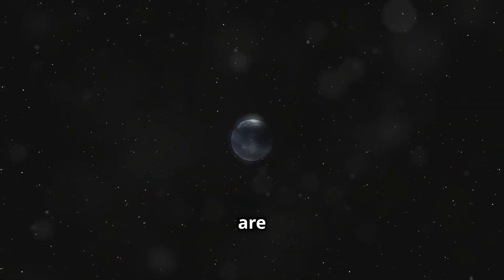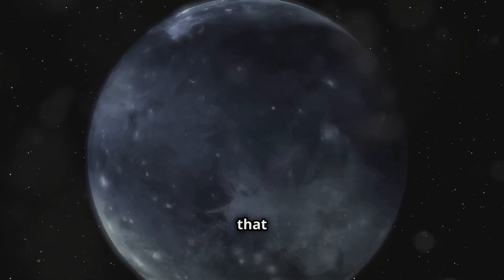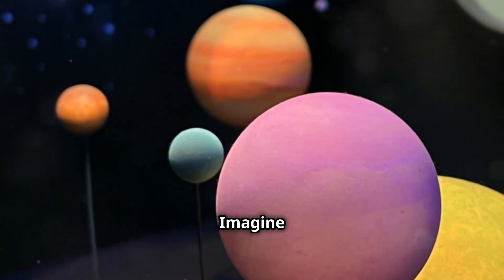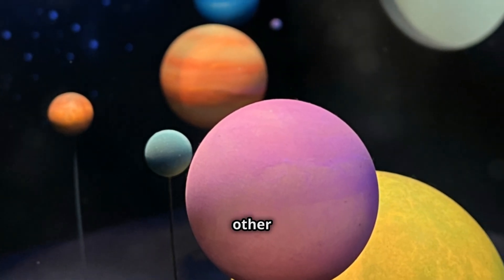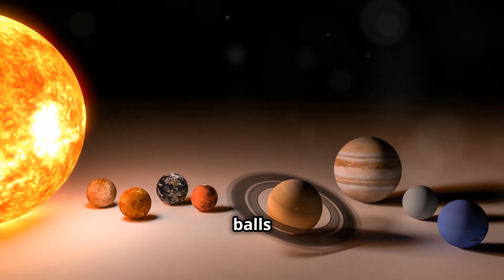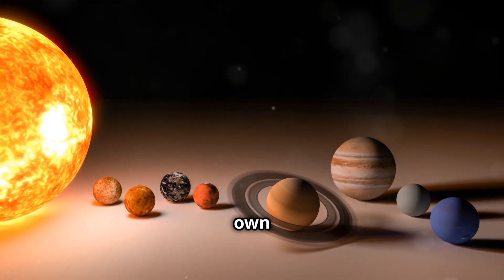The TNOs are not just randomly scattered. They are grouped in a manner that suggests they are being shepherded by an unseen force. Imagine a cosmic game of pool. In this game, the planets and other celestial bodies are like billiard balls on a table, each following its own path.